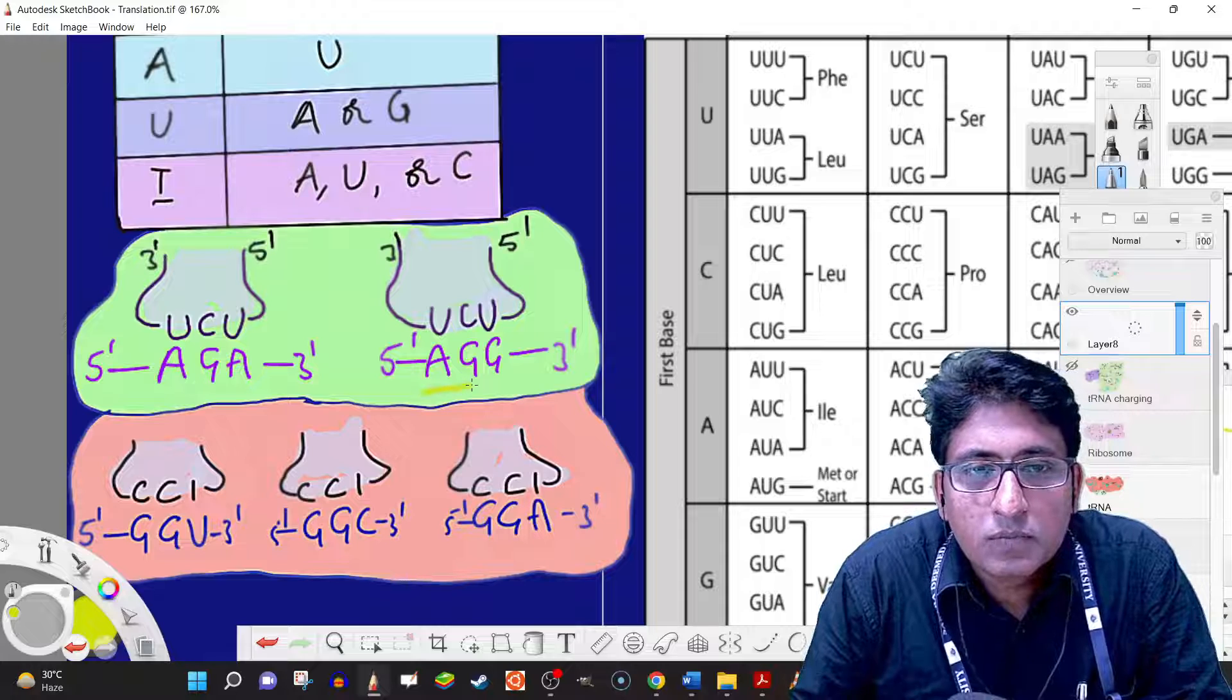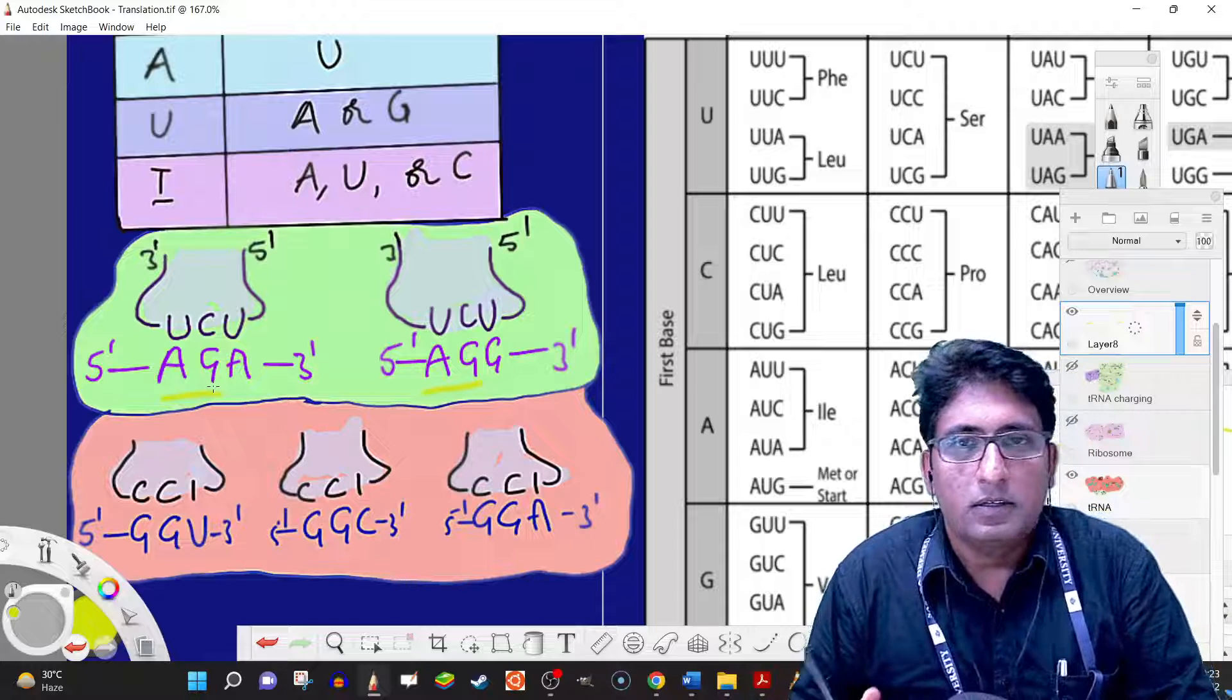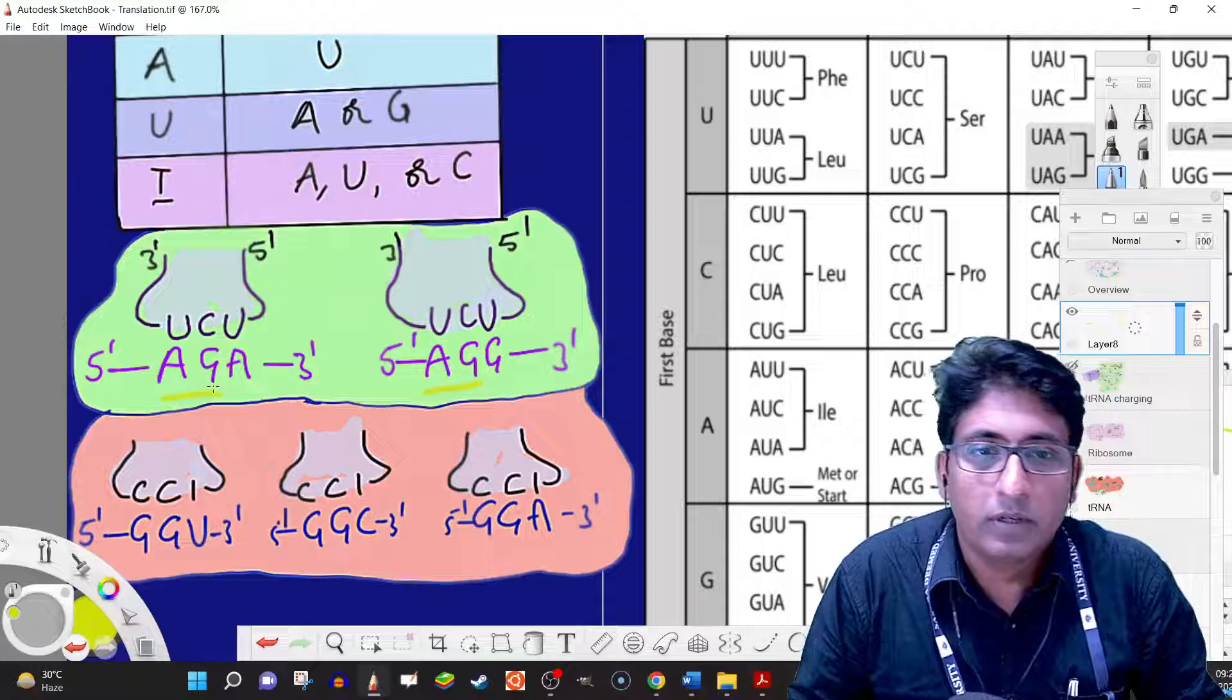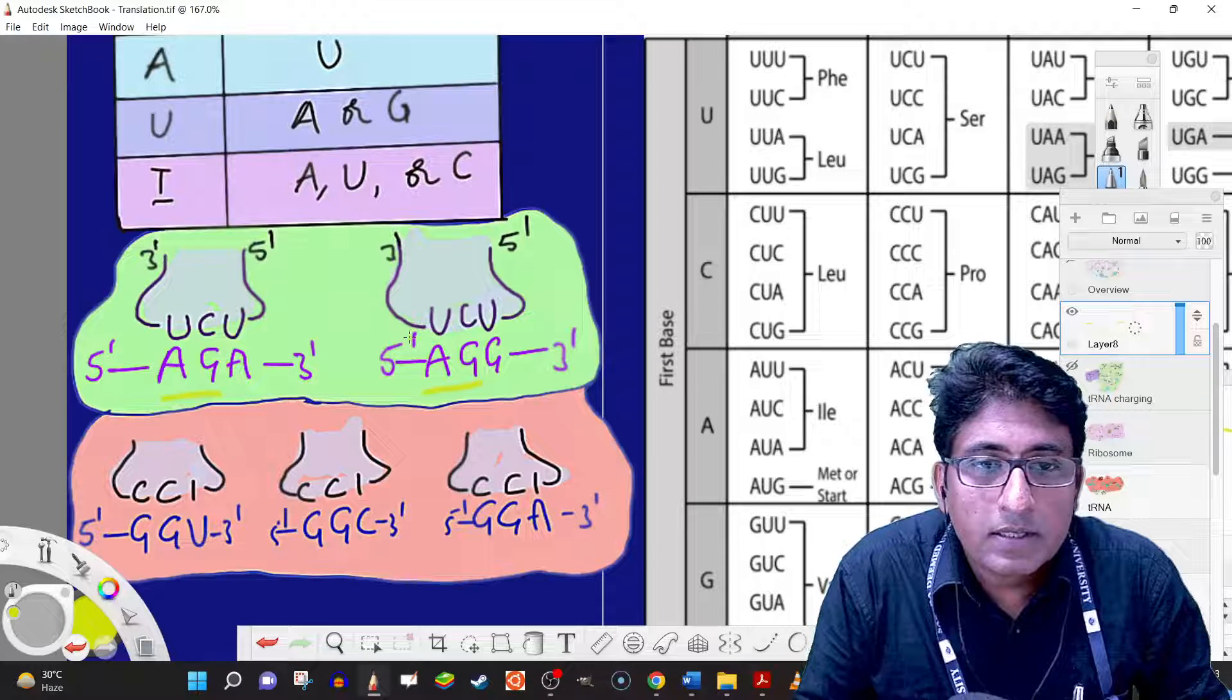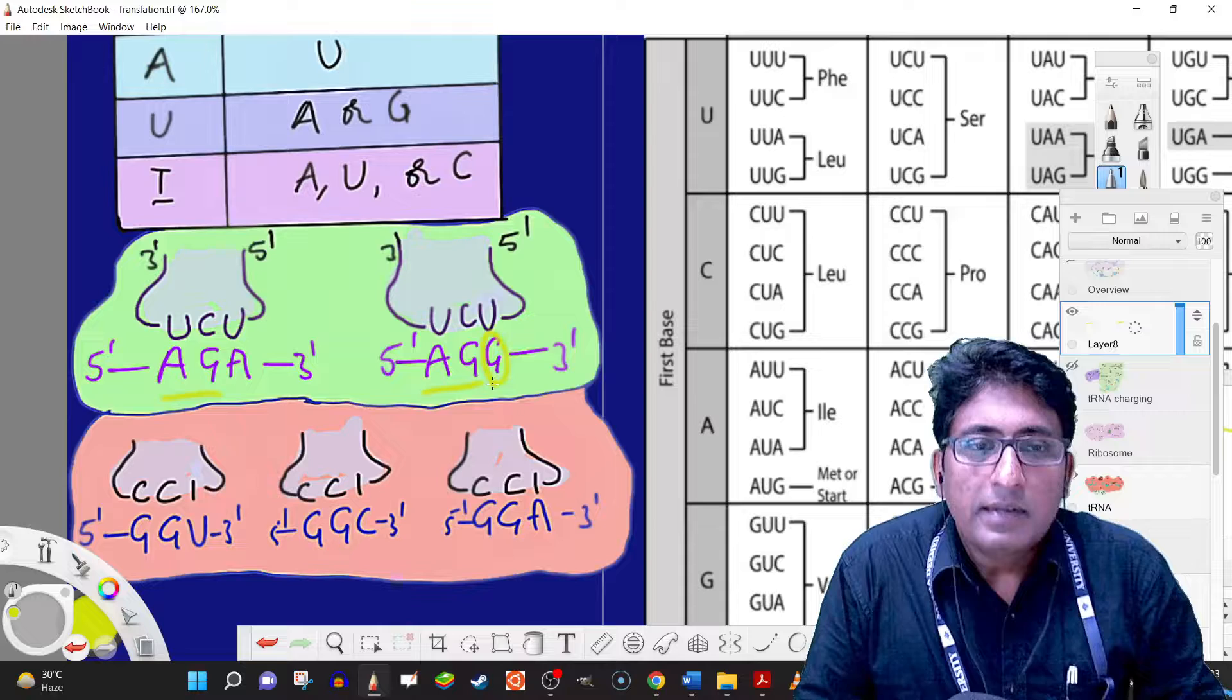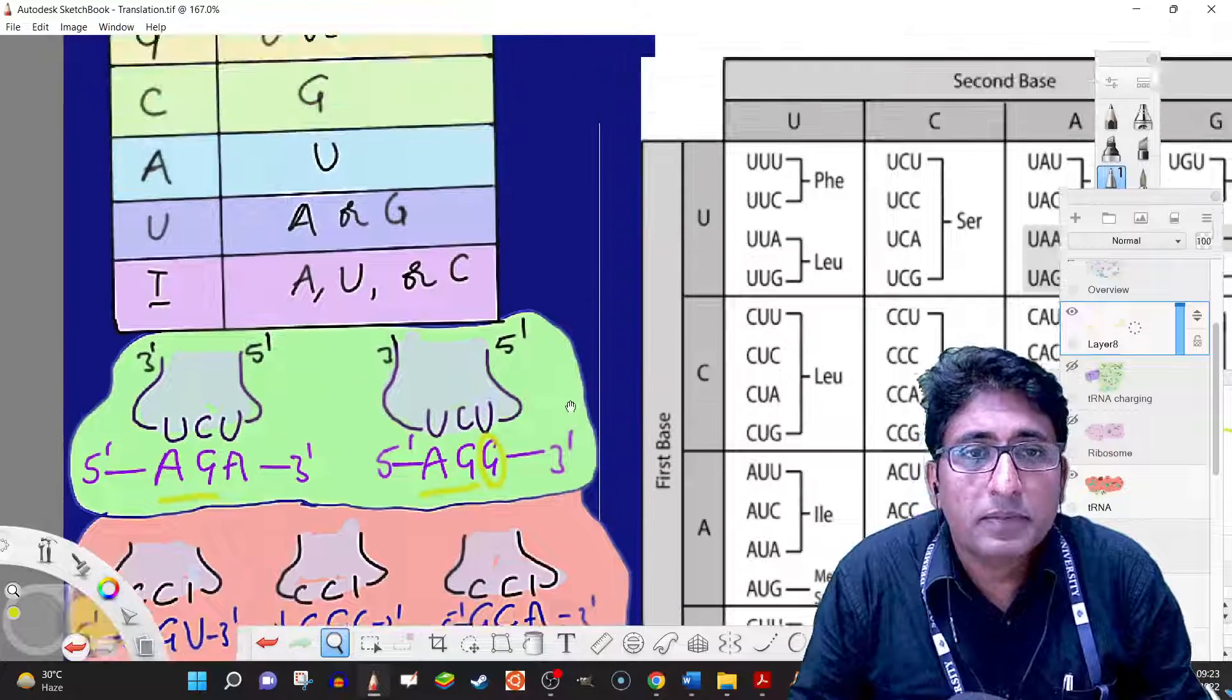In the third position, the first two positions have supposedly perfect base pairing, the canonical ones, whereas in the third position there is a little bit of relaxation in terms of base pairing.